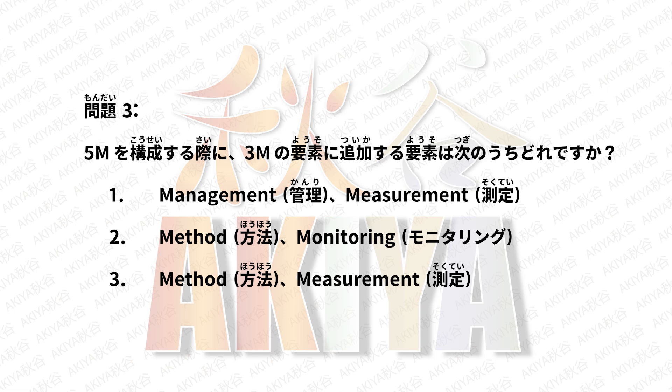問題3: 5Mを構成する際に、3Mの要素に追加する要素は次のうちどれですか。1. Management（管理）・メジャーメント（測定）。2. Method（方法）・モニタリング。3. Method（方法）・メジャーメント（測定）。正解は3番です。